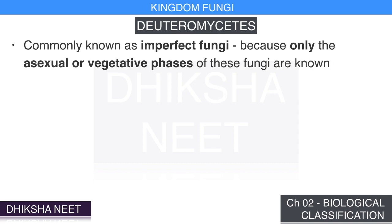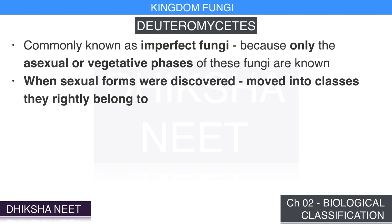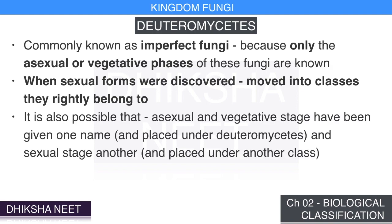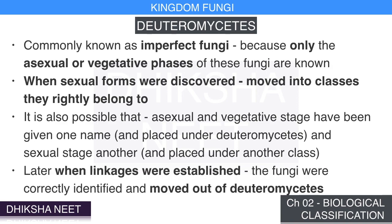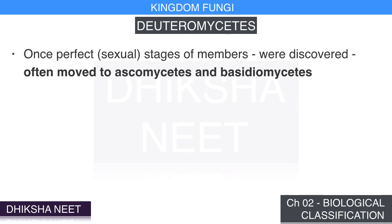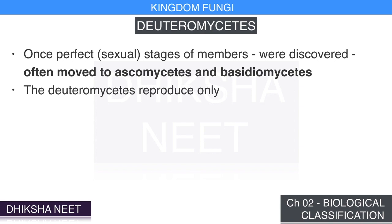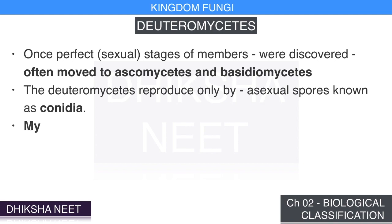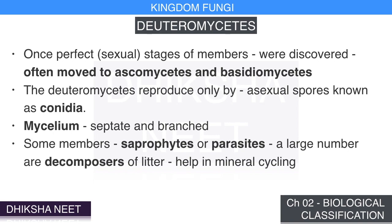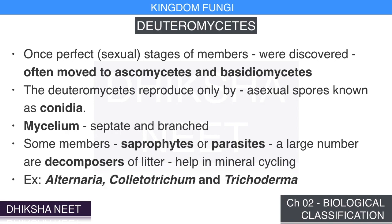Deuteromycetes, commonly known as imperfect fungi, because only the asexual or vegetative phases are known. When sexual forms were discovered, they were moved to the classes they rightly belong to. It is also possible that asexual and sexual stages were given different names — once linkages were established, fungi were correctly identified and moved out of deuteromycetes, often to ascomycetes or basidiomycetes. Deuteromycetes reproduce only by asexual spores known as conidia. The mycelium is septate and branched. Some members are saprophytes or parasites; many are decomposers of litter and help in mineral cycling. Examples are Alternaria, Colletotrichum, and Trichoderma.